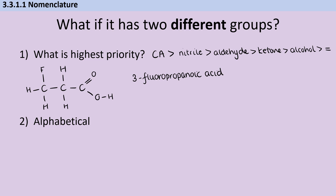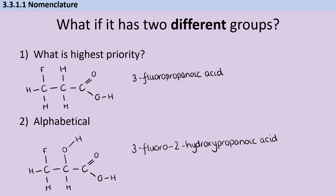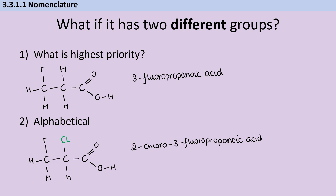It's also possible that you have more than one substituent group — the ones that are going to have prefixes. The rule is you're going to number from the smallest number you can, and then write them in alphabetical order. So if we replace one of our hydrogens with a hydroxy group, this becomes 3-fluoro-2-hydroxypropanoic acid — hydroxy comes after fluoro because H comes after F in the alphabet. It's not to do with the numbers; we're still numbering from that priority-one carbon on the right-hand side. If I swapped that hydroxy out for a chlorine, I would have 2-chloro-3-fluoropropanoic acid — purely alphabetical order.